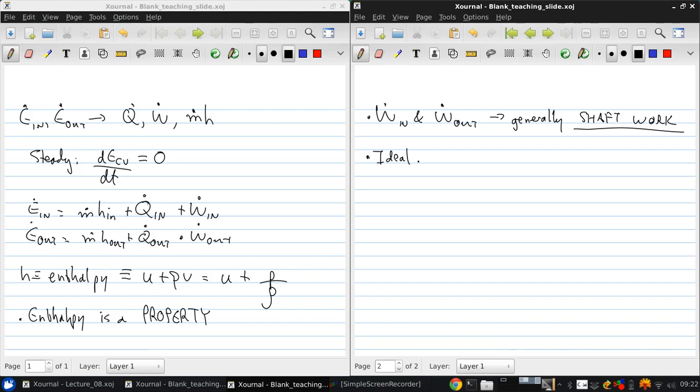Now, most often we're going to be concerned with working fluids that are ideal gases. So this has an equation of state, which is just an equation that relates the properties, PV equals RT. Remember, R is the specific gas constant, which is the universal gas constant divided by the molar mass of the gas. Also for an ideal gas, U, the internal energy, and H, the enthalpy, are functions of temperature only.